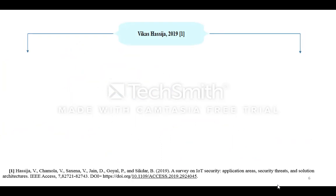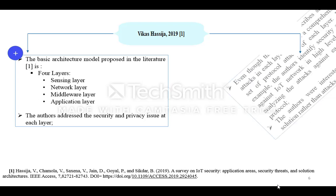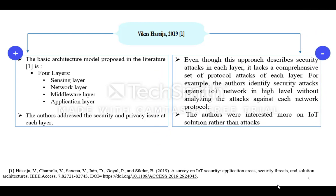State of the art. For the first class, any IoT application can be divided into four layers: sensing, network, middleware, and application layer. The authors address the security at each layer. Even though this approach describes security attacks in each layer, it lacks a comprehensive set of protocol attacks for each layer. For example, the authors identify security attacks against IoT network without analyzing the attacks against each network protocol. The authors were more interested in IoT solutions rather than attacks.